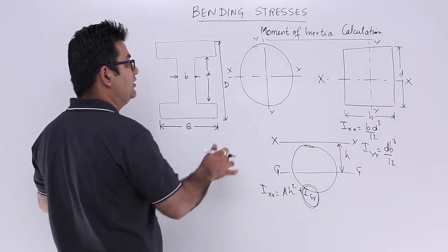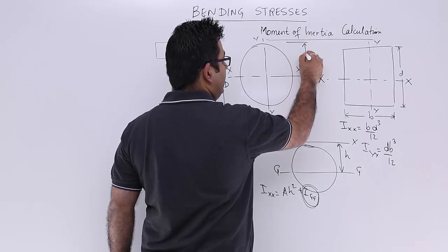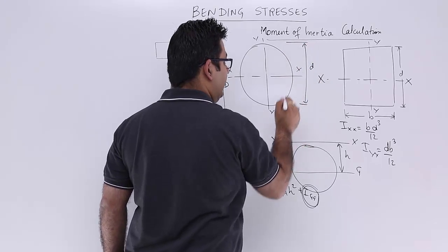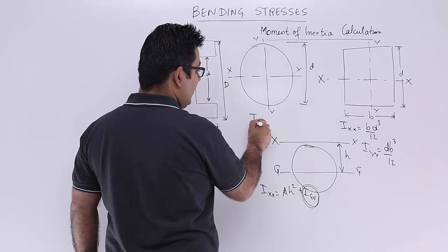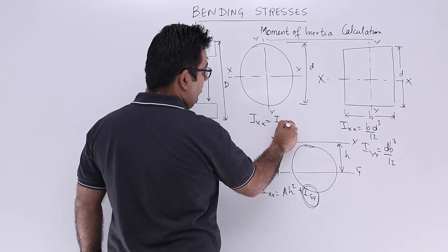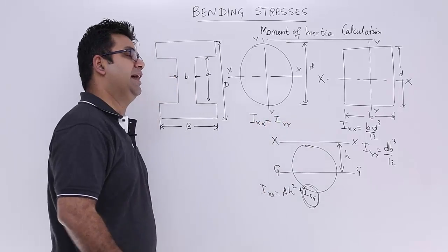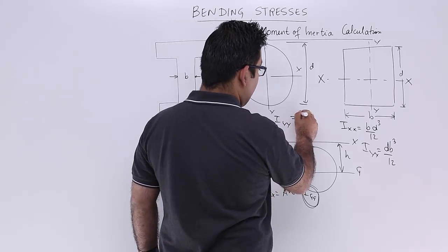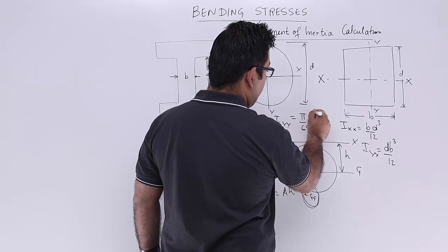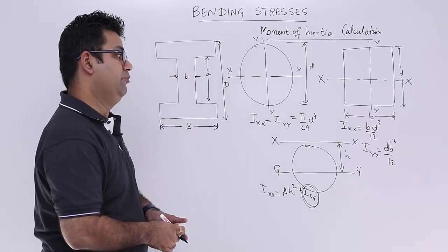Similarly, if you look at this, this is a circular cross section. The diameter is d. So in this case, the moment of inertia about the two centroidal axes is equal to pi by 64 into d to the power 4.